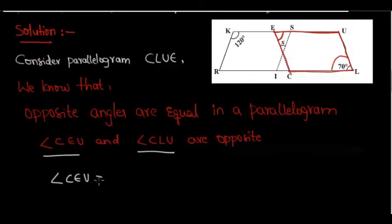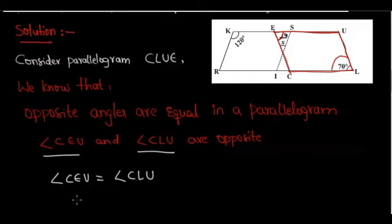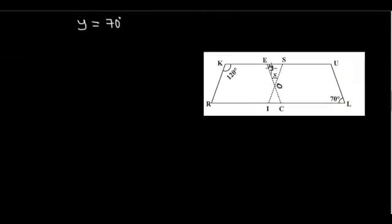Angle CEU is equal to angle CLU. Let us assume angle CEU as Y. Therefore Y is equal to 70 degrees. We have got the value of angle CLU, that is angle Y equals 70 degrees.